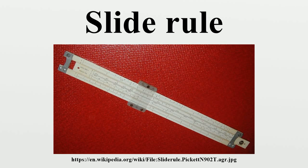The illustration below demonstrates the computation of 5.5 divided by 2. The two on the top scale is placed over the 5.5 on the bottom scale, and the one on the top scale lies above the quotient, 2.75. There is more than one method for doing division, but the method presented here has the advantage that the final result cannot be off scale, because one has a choice of using the one at either end.